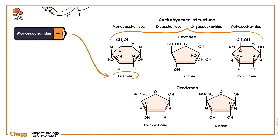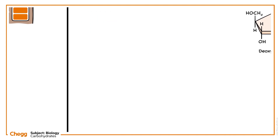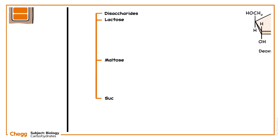Monosaccharides such as glucose are favoured for energy production because of their simple structure and high yield of ATP molecules. Disaccharides consist of two monosaccharides adjoined by a glycosidic linkage. Examples of disaccharides include lactose, maltose, and sucrose.